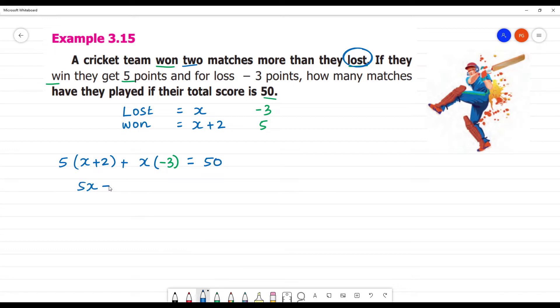Multiply 5x, 5 into 2 is 10. 5 into x is 5x, 5 into 2 is 10. Plus, x into minus 3 is minus 3x, which is equal to 50.